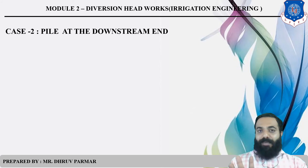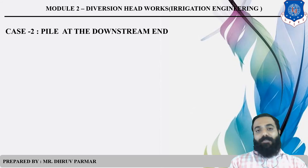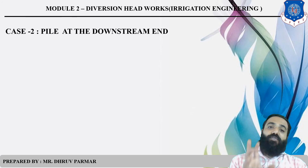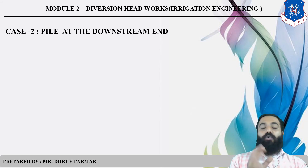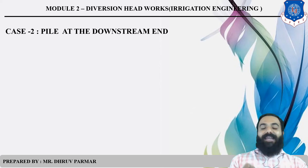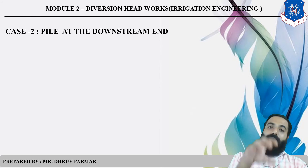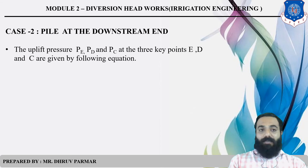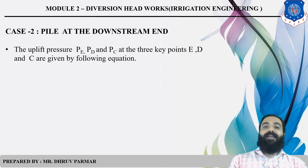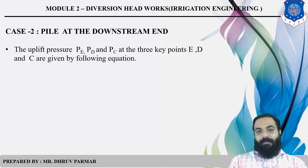For example, if 2 meters of thickness is provided in a barrage, but the design formula gives t = (4/3) × h / (G − 1) = 2.4 m, then the provided thickness of 2 m is less than the required 2.4 m, and the weir or barrage will fail. Always check that the provided thickness is not less than the design thickness.